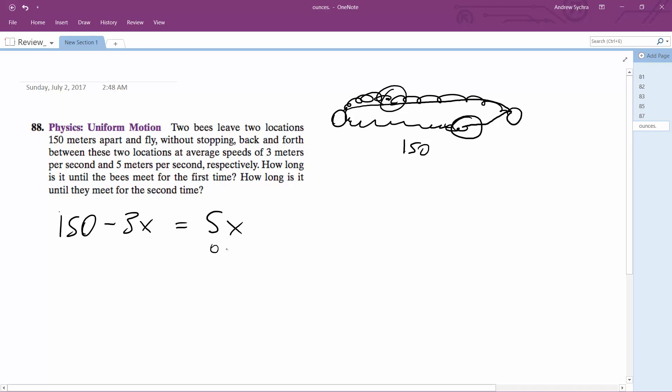The reason why is because this is starting at like a base of zero. You can just pick either one. You could do 150 minus 5X is equal to 3X, but we'll just do this.